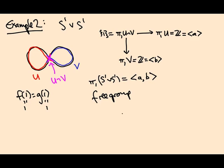Giving U generator A and V generator B, the amalgamated product — which is π₁ of the wedge of two circles — is generated by A and B. There are no relations from π₁U, no relations from π₁V, and no amalgamated relations either, because the only element of the intersection is the identity, giving 1 = 1. So the group is generated by A and B with no relations: this is the free group on two generators. Elements are words like A², B⁻¹, A¹⁴, B, A, B²... with no simplification allowed other than AA⁻¹ = 1. This group is very large and non-abelian.